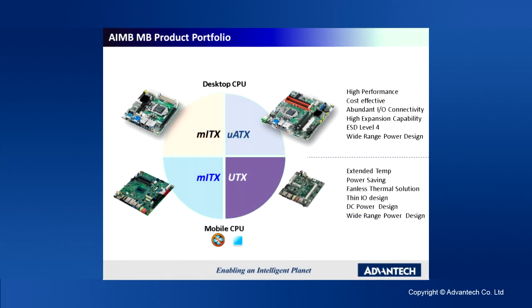We have the following form factors in industrial motherboards: Mini-ITX and UTX. For mobile CPU, these are BGA-type Mini-ITX boards. With UTX, you have half the size of Mini-ITX but keep 80% of the features.